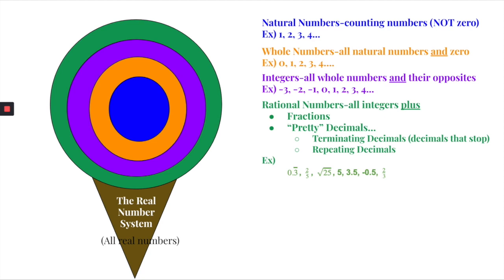Other examples of rational numbers might be the square root of 25 — yes, it's a square root, but it simplifies to five. They could also be negative decimals or negative fractions. So rational numbers are our biggest category of numbers.